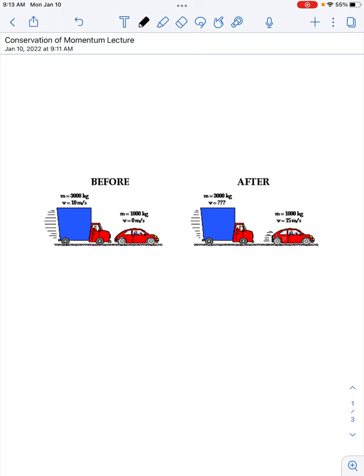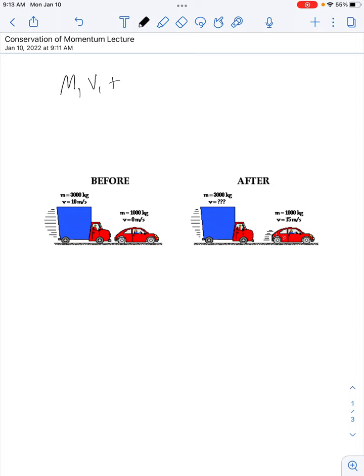All right, so our equation is M1V1 plus M2V2 equals M1V1 prime plus M2V2 prime. Everything on the left side of the equal sign is what happens before the collision, and everything on the right side is what occurs after the collision. If you want to make a note of that, you are more than welcome to do so.